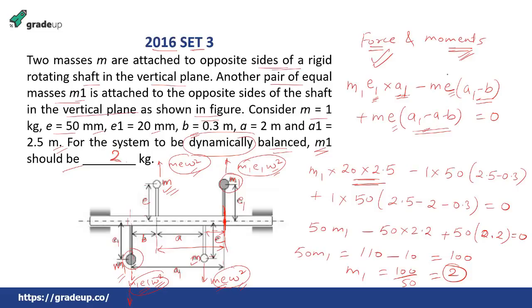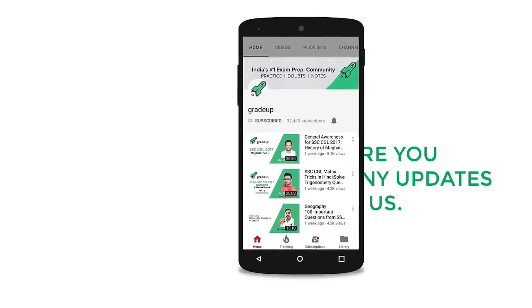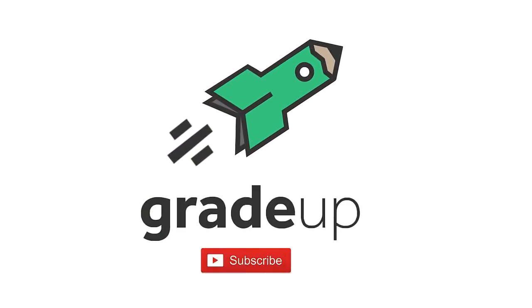So this is equal to 100 or m1 equal to 100 divided by 50 equal to 2. So your answer is m1 equal to 2 kg. Very simple question, just see, the forces are already balanced, so you need to balance the moments. And as soon as you balance the moment, you get the answer as 2 kg.